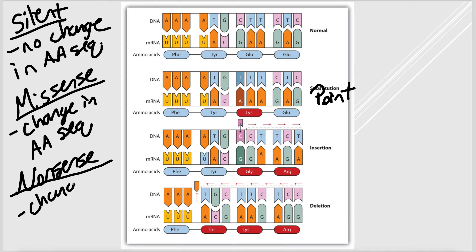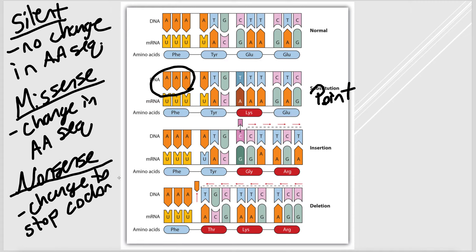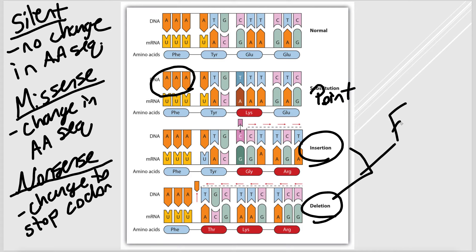Nonsense mutations change a codon to a stop codon, which tells the ribosome to stop making protein — resulting in proteins that are too short. Insertions and deletions cause frameshift mutations, which change how molecular machines read the sequence — like taking words out of a sentence or inserting words, changing the reading frame of the DNA.